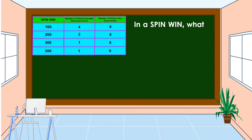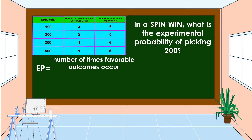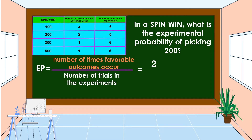In a Spin-Win, what is the experimental probability of picking 200? Using our formula — number of times favorable outcomes occur divided by number of trials in the experiment — as we can see in the table, the number of times favorable outcomes occur for 200 is 2, and the number of trials in the experiment is 6.